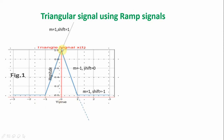It has two straight line segments: one from minus 1 to 0 having a positive slope, and from 0 to 1 it is a straight line with a negative slope. So we can think of it as consisting of ramps of different slopes at different points on the time axis.